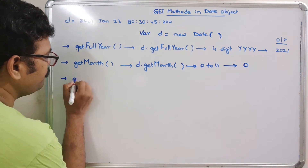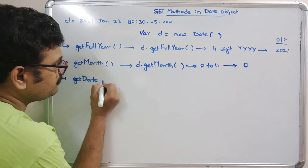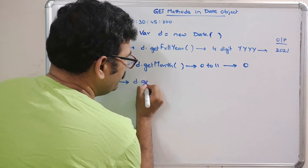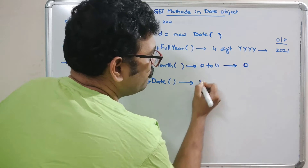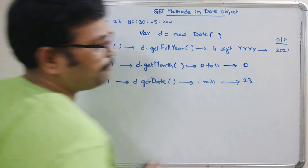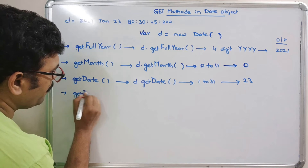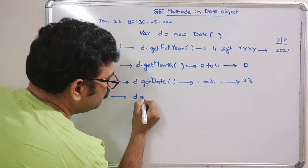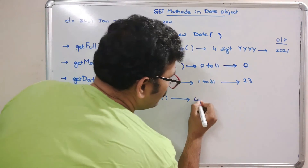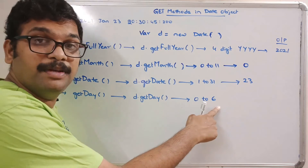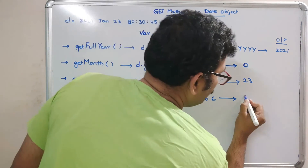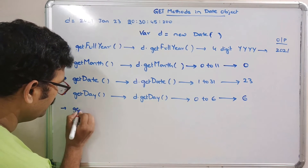The next method is getDate(), called as d.getDate(). The date can be from 1 to 31, so from our example we get 23. Then getDay(), called as d.getDay(), returns a number from 0 to 6, where 0 is Sunday and 6 is Saturday. Since January 23rd is a Saturday, the result will be 6.